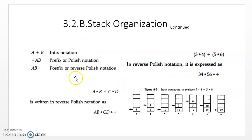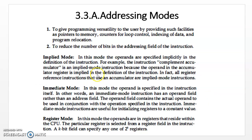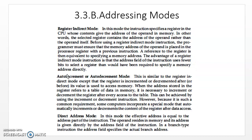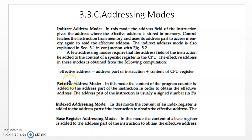We covered what is stack, what operations are performed on the stack, and what are the applications of the stack. Then we covered addressing modes — there are 10 different addressing modes: implied, immediate, register, register indirect, auto increment, decrement, direct, indirect, and some addressing modes depending upon effective address: relative, index, and base, where the effective address is calculated by adding two addresses — one in the instruction itself and the other stored in a register such as the program counter, index register, or base register.